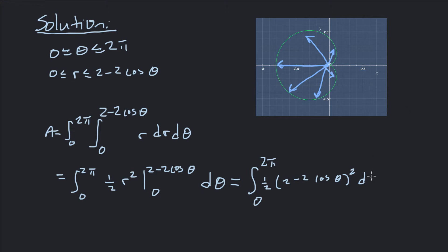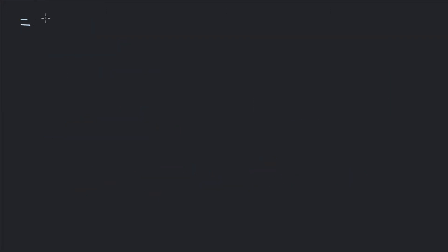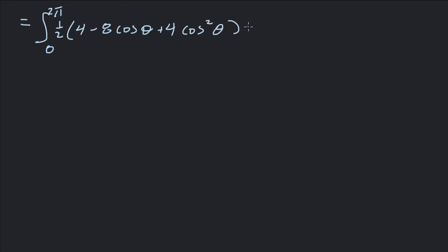Now we simplify the integrand — square it out, multiply by one half, then complete the integral. FOILing that out gives us ½ times (4 - 8cos(θ) + 4cos²(θ)) dθ. Two of these functions are easy to integrate, but cosine squared requires a trig identity first. Simplifying by multiplying through by ½ gives us 2 - 4cos(θ) + 2cos²(θ) dθ.